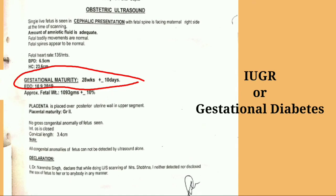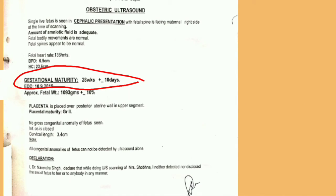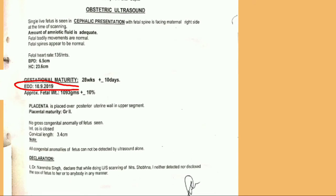Now moving to the next line: gestational maturity. It means the age of the pregnancy, given here as 28 weeks and 10 days variation — that is the approximate time period of the pregnancy. The next line, EDD, is the estimated date of delivery, meaning when the delivery is possible either by water breaking or labor pain. The estimated date is given in this section.